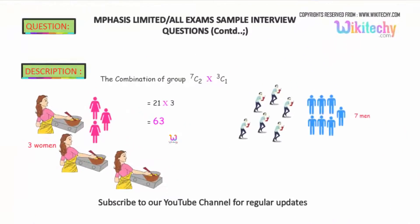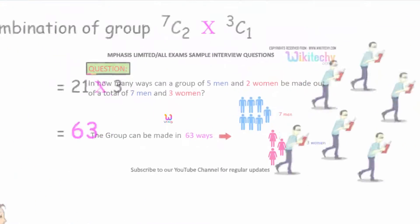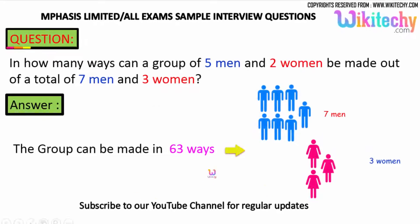Previously, we got the answer for 7C2 is 21 and 3C1 is 3. So 21 into 3, the final answer is 63 combinations. With 7 men and 3 women, make a combination of 5 men and 2 women. We can order or group it in 63 different ways. So that's the final answer. The answer is 63 ways.